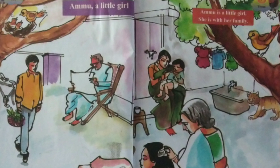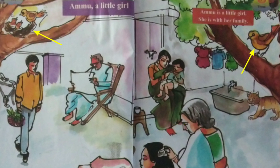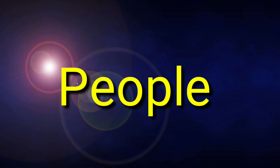Children, observe this picture carefully. What do you see in this picture? Yes, some people, birds, animals. Let's see who are there in the picture.